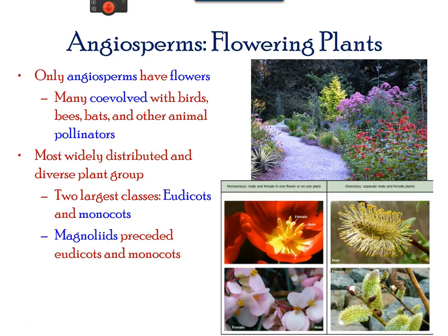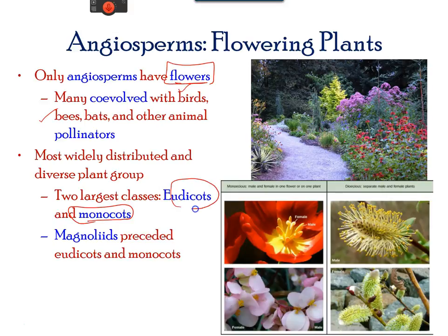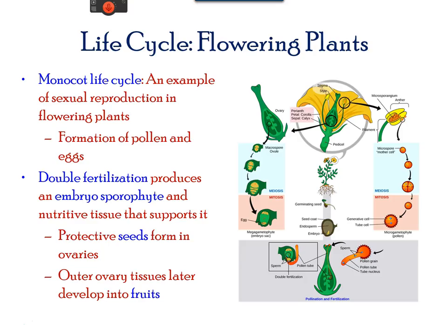The angiosperms are the flowering plants. They form a beautiful landscape and are pollinated by birds, bees, bats, and other animals. There are two main classes: monocots, such as lily and grassy plants, and dicots, which are plants that have woody branches. Most flowering plants have a reduced gametophyte stage. The gametes are the pollen and eggs and are confined to the sexual part of the plants, which are the flowers.